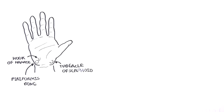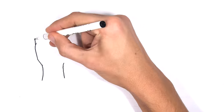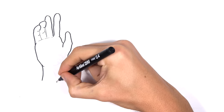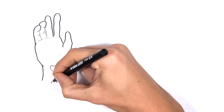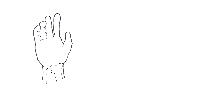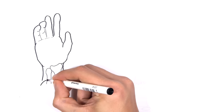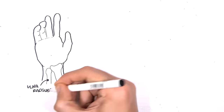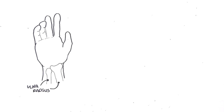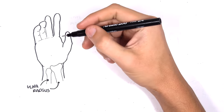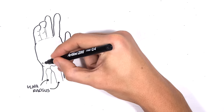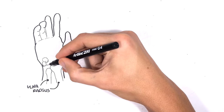Let's look at the right hand again and introduce some of the bones. Here are the forearm bones: the ulna medially and the radius laterally. You can remember the radius is lateral because lateral is where you can feel the radial artery.